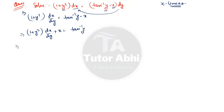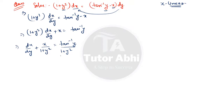After rearranging, we get: dx/dy + x/(1 + y²) = tan⁻¹y/(1 + y²). Now we can identify P(y) = 1/(1 + y²) and Q(y) = tan⁻¹y/(1 + y²). The next step is to find the integrating factor.